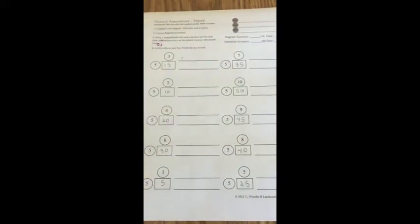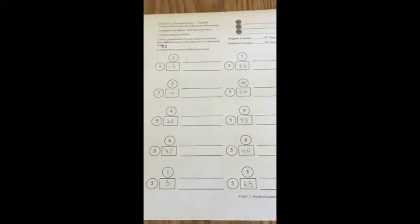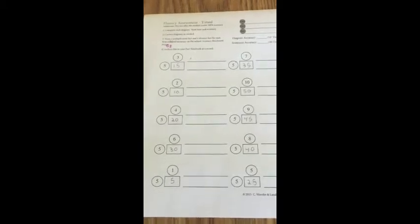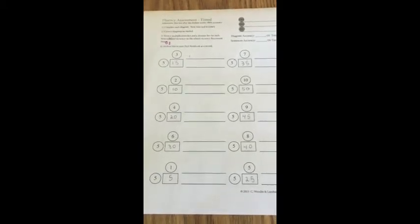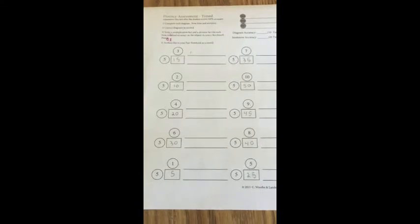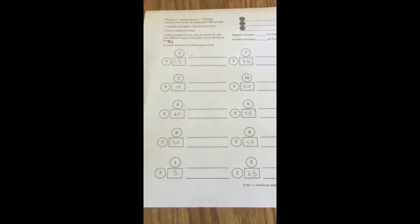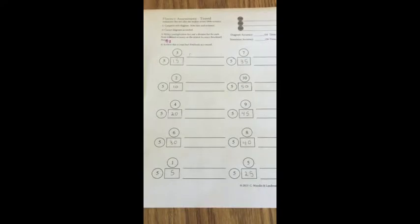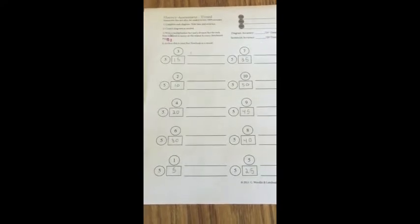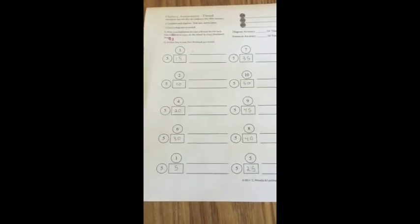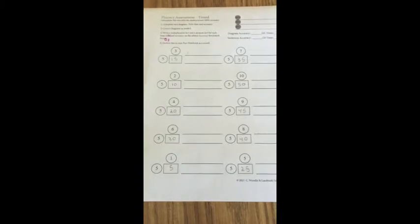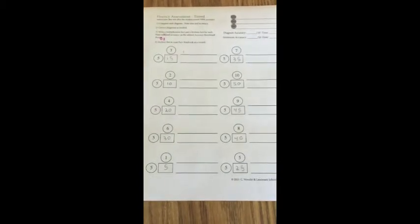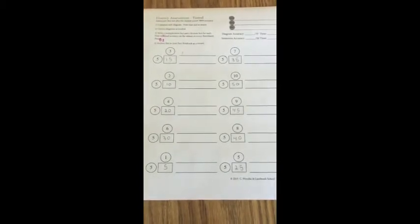All right, the benchmark time to try to get to is 60 seconds for all the diagrams. So I usually go around and see who's done within 60 seconds and make a note. And everyone in this class did, so everybody passed that benchmark. Now I'm going to correct and make sure everything's accurate and then they're going to write sentences and try to write their sentences within three minutes.